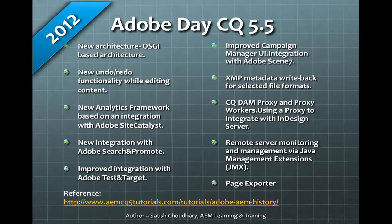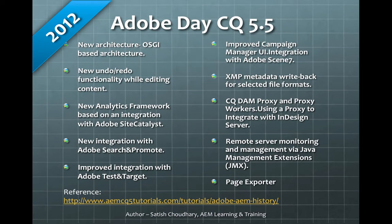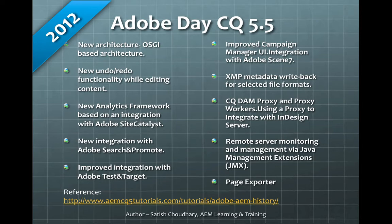In 2012, Adobe CQ 5.5 was launched with a new OSGi-based architecture. It introduced undo and redo while editing, letting you go back to previous versions and return to the current one. It started integrating with analytics frameworks and many Adobe products: Adobe Search, Adobe Test and Target, Adobe Campaign, Adobe Scene7 — plenty of cross-application integration. It also had secure DAM proxy and proxy workers, remote server management via JMX, and page exporters.